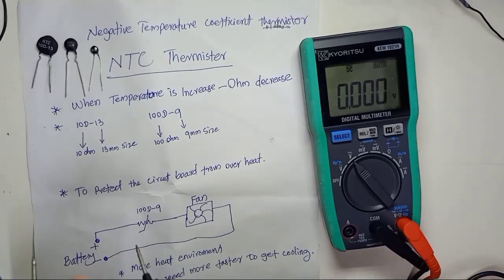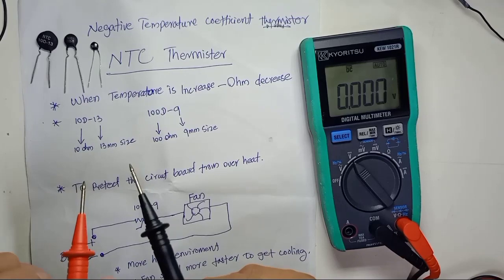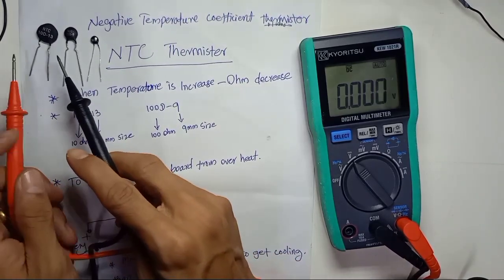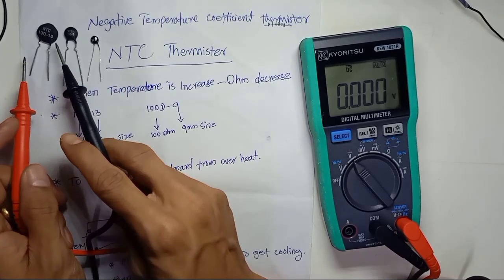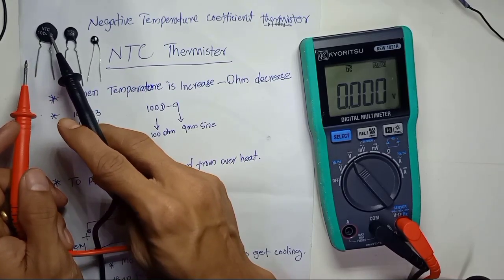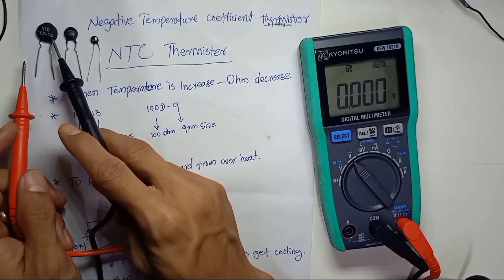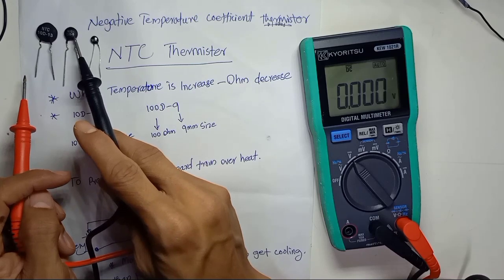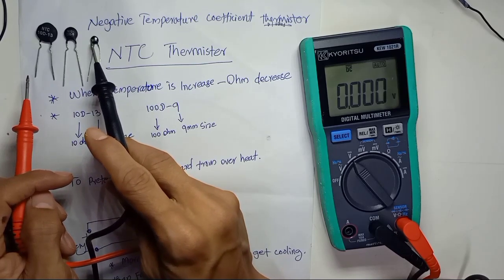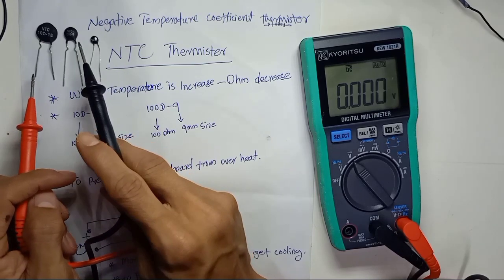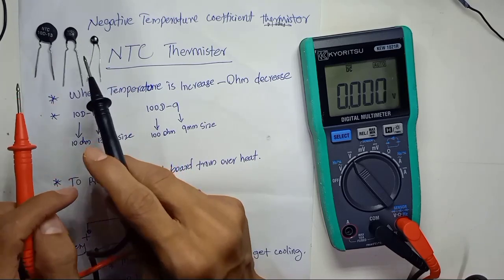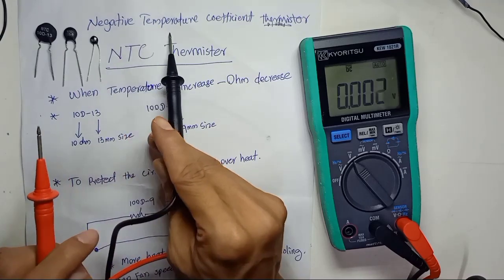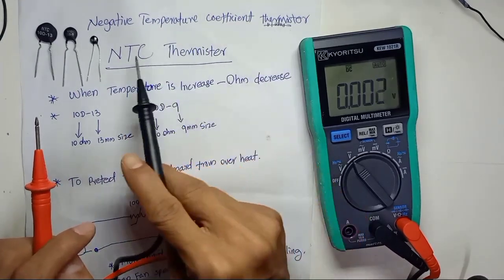For this video I'd like to share what is an NTC thermistor. I have a few values of NTC thermistors here: NTC 10D-13, NTC 100D-9, and one labeled 103. Basically all of these are thermistors — negative temperature coefficient thermistors, or NTC thermistors for short.